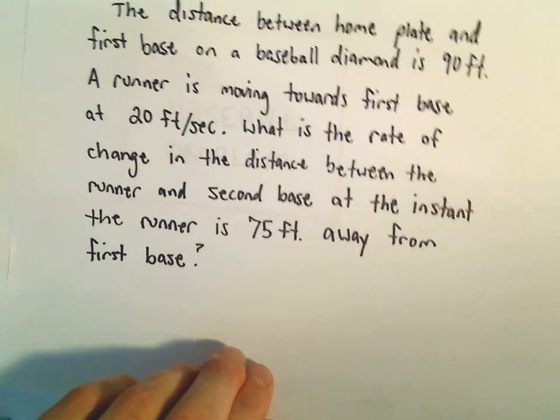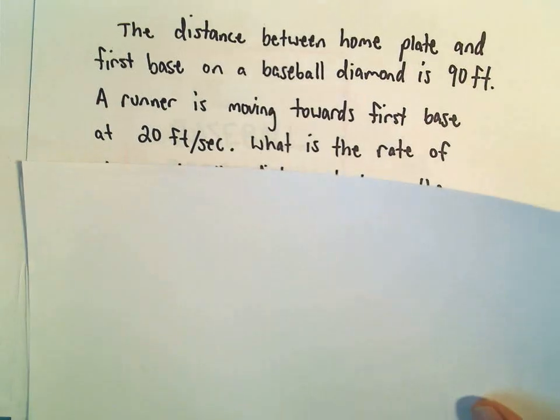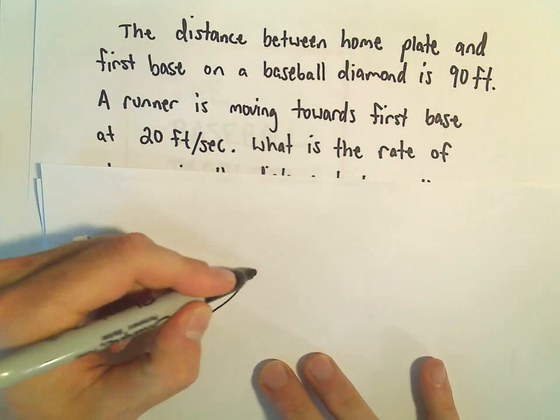So the distance between home plate and first base on a baseball diamond, if you're not familiar, is 90 feet. That's actually the distance from all the bases, from one base to the next.